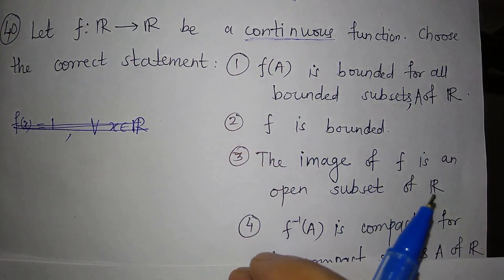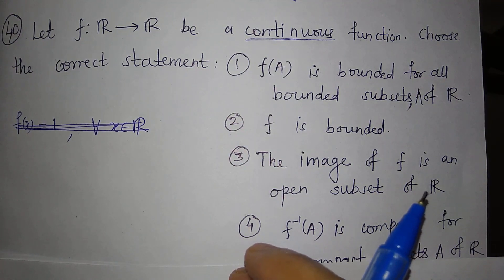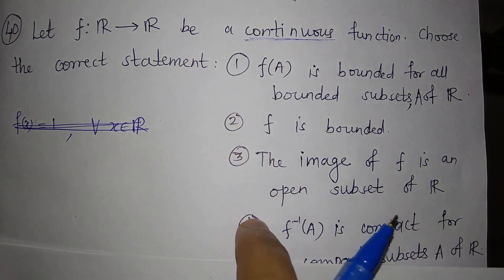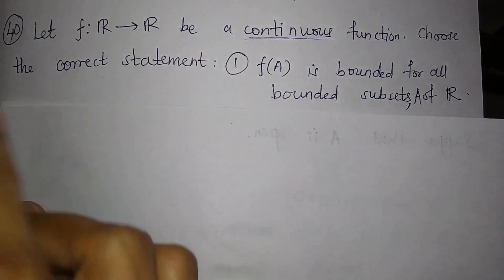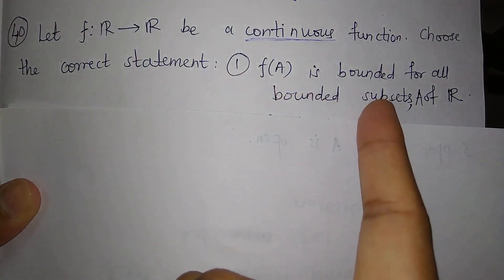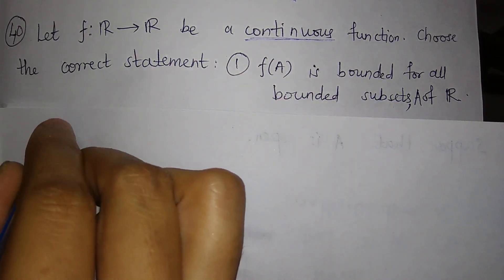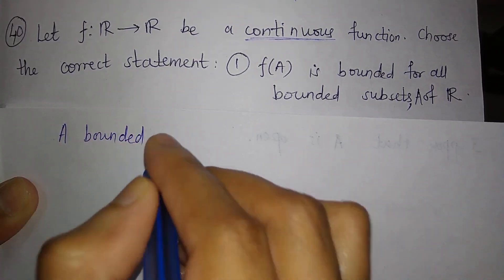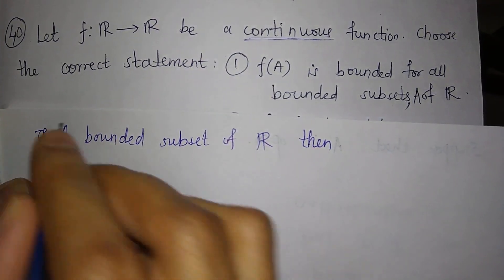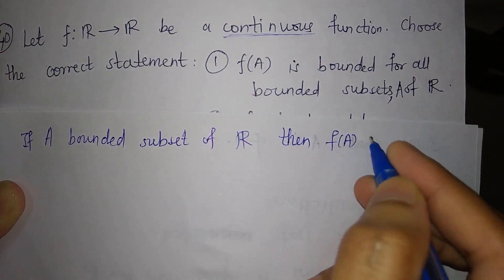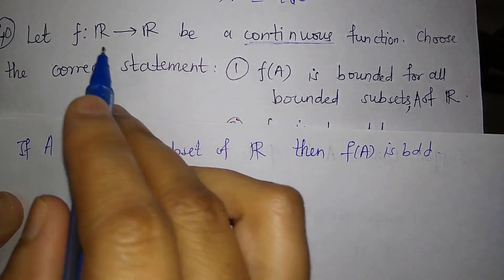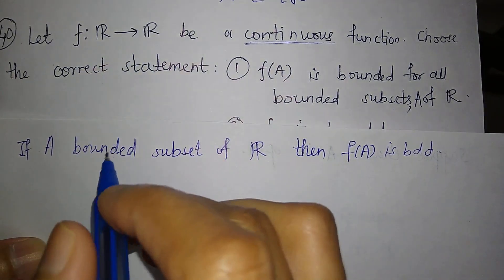We must discard all the remaining options, so we need counter-examples for each. Let us prove the first statement. We are given that f(A) is bounded for all bounded subsets A of R. That means if you take any A which is a bounded subset of R, then f(A) is bounded. We are given that this function is continuous and defined on real numbers.